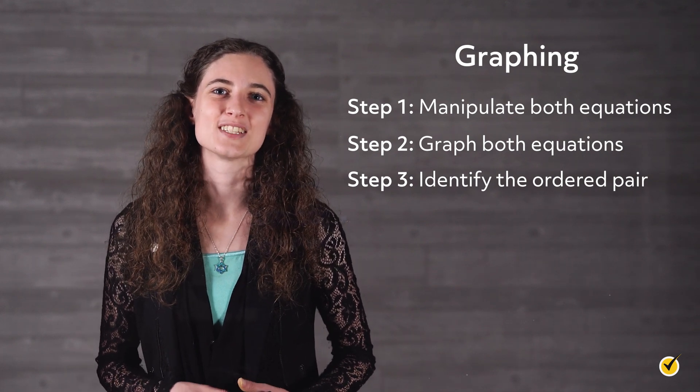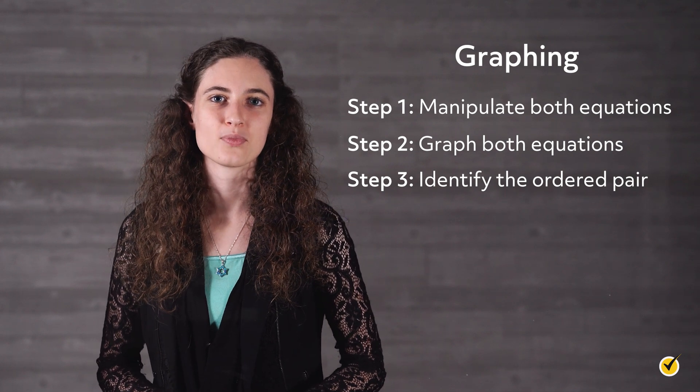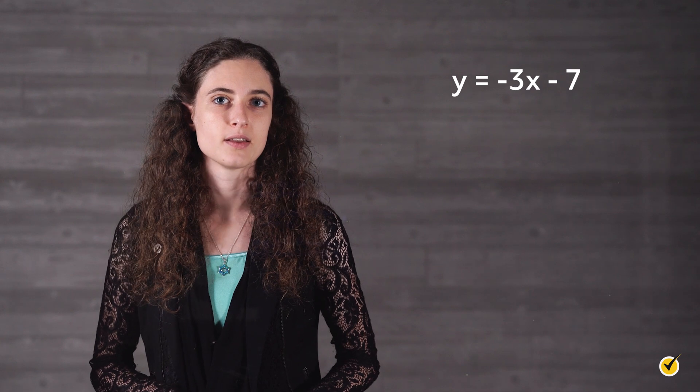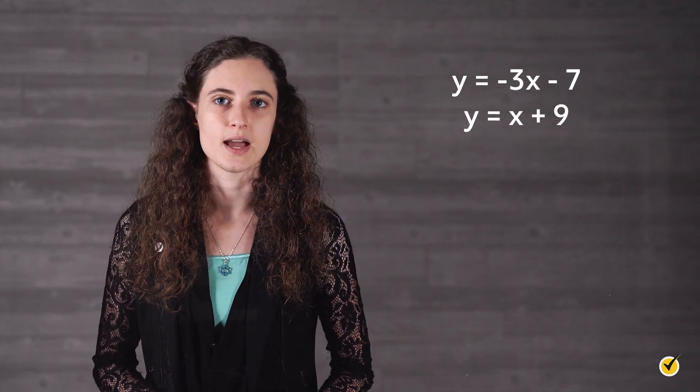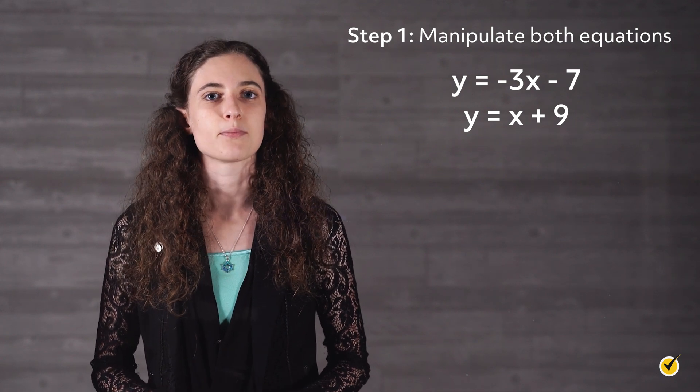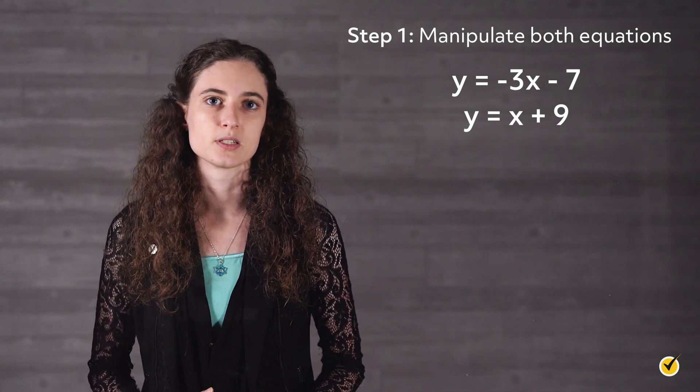Let's take a closer look at these three steps with an example. We are going to use the system y equals negative 3x minus 7, and y equals x plus 9. Remember, to solve this system we need to figure out where the lines intersect when they are graphed. Step one is to manipulate the equations so that they are both in slope-intercept form. For this example, both equations are already set up in this form, so we are ready for step two.